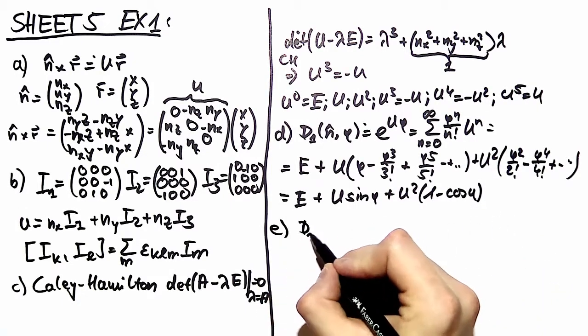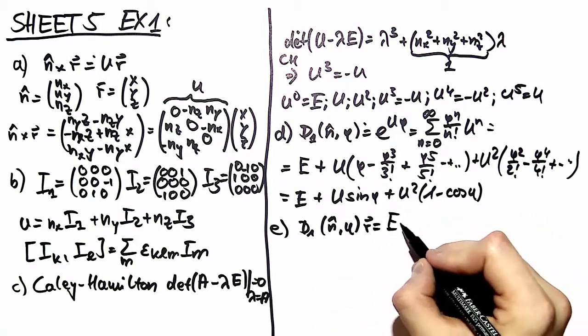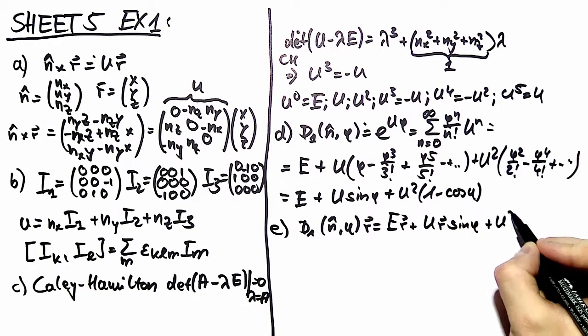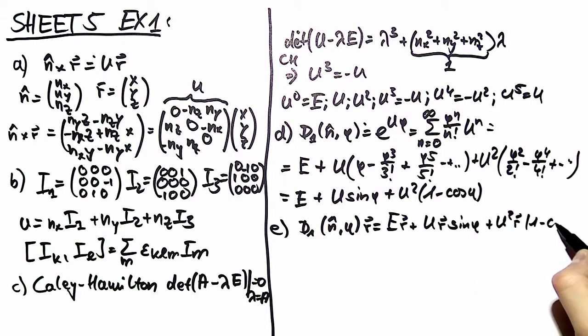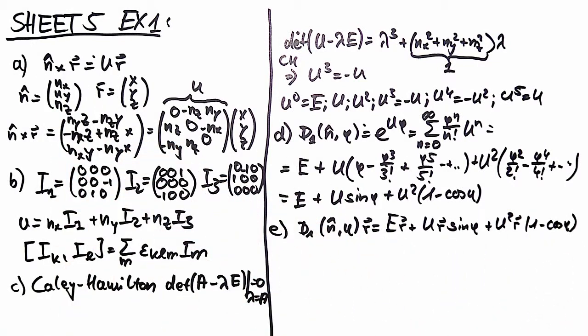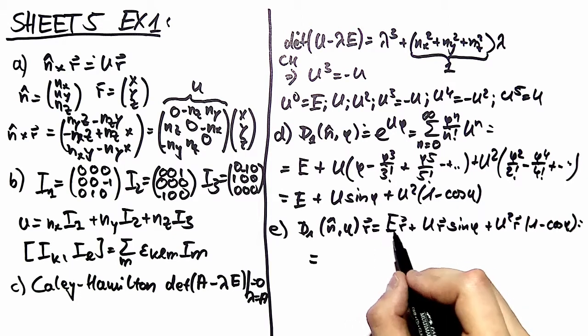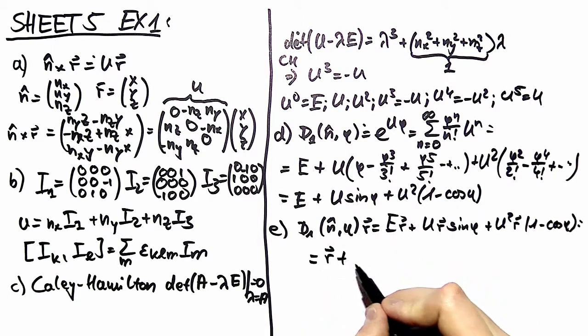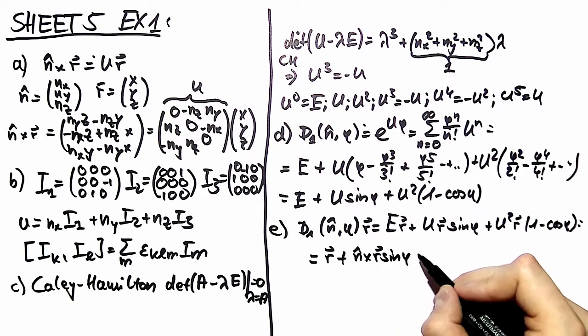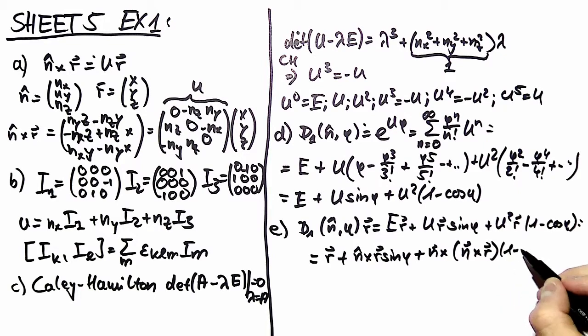In part e we apply d on a vector r. And all we do is we write that out. And what we recognize then is the relation we started with. U times r is nothing else than the cross product between the screw axis and our vector r. So here you have e times r which is equal to r. And then you have u times r which is nothing else than n cross product with r times sine phi. And here you have u applied twice on r. So you have n cross product to n cross product with r times one minus cosine phi.